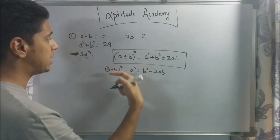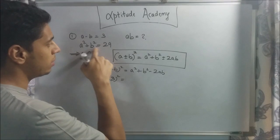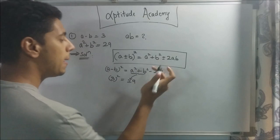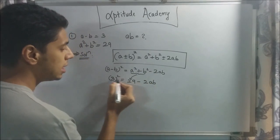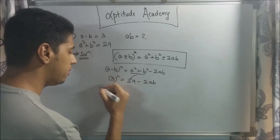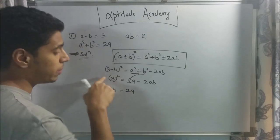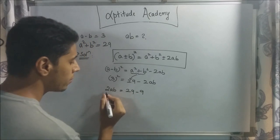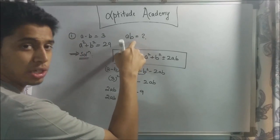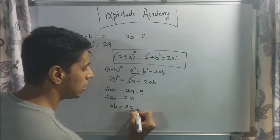We just need to substitute the values given to us. a-b is 3, so 3² = a² + b². We know a² + b² = 29, so this becomes 29 minus 2ab. We take minus 2ab to the left side and 9 to the right side, so plus 2ab = 29 - 9. Therefore 2ab = 20, and since they've asked for 2ab, the answer is 20 — wait, a·b is 20 divided by 2, which equals 10.